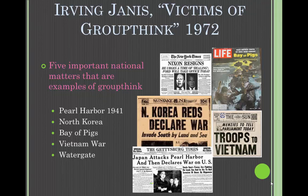Irving Janis' book Victims of Groupthink in 1972 listed five important national matters that were examples of groupthink. These matters included the preparedness policies of the U.S. Navy at Pearl Harbor in 1941, the decision to pursue the North Korean army on its own territory by President Eisenhower, the decision by President Kennedy to invade Cuba at the Bay of Pigs after Fidel Castro established a Communist government, and the decision to continue the Vietnam War by President Johnson.